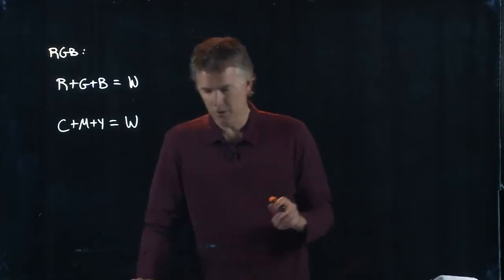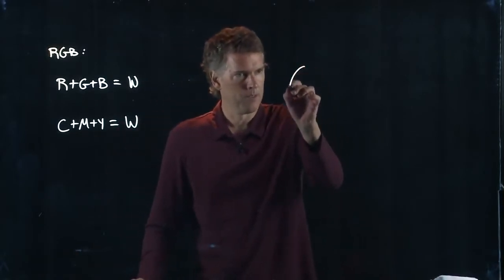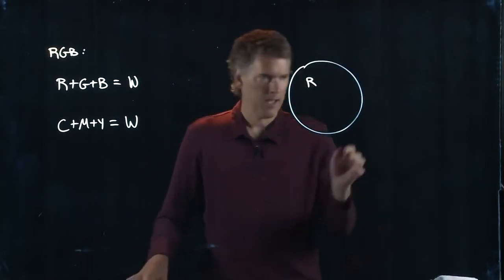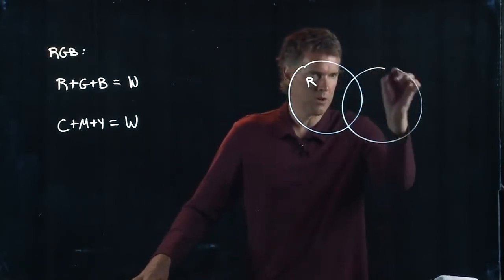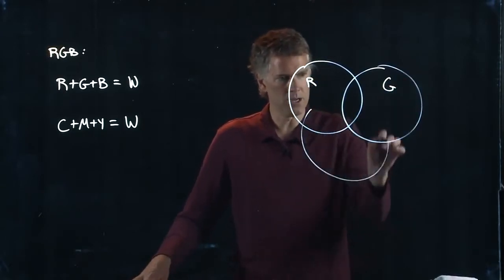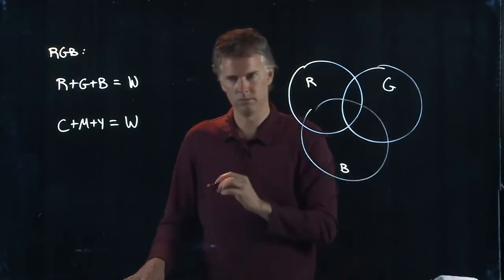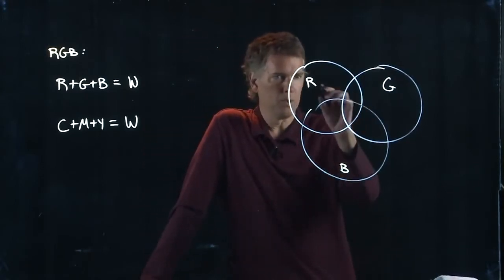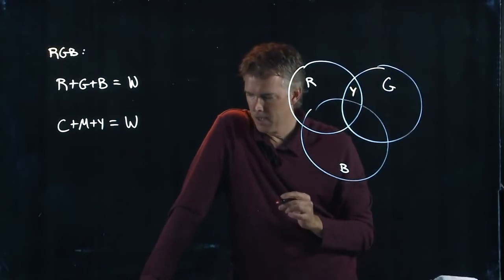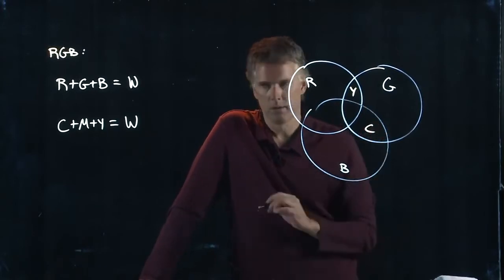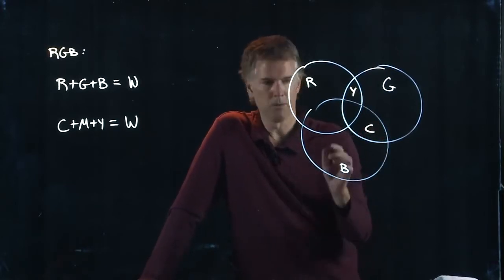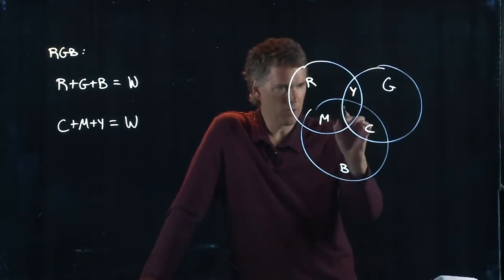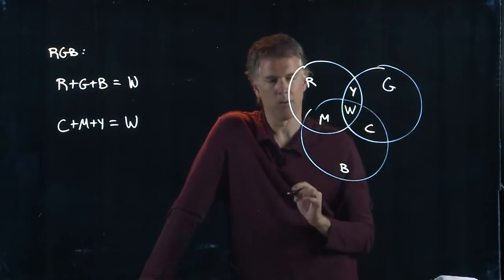But let's see how these things overlap. So if I think about a region here of red, and a region here of green, and a region here of blue, then in this overlap region between red and green I get yellow. And between green and blue I get cyan, and between blue and red I get magenta. And if I add all those things together, then I get white.